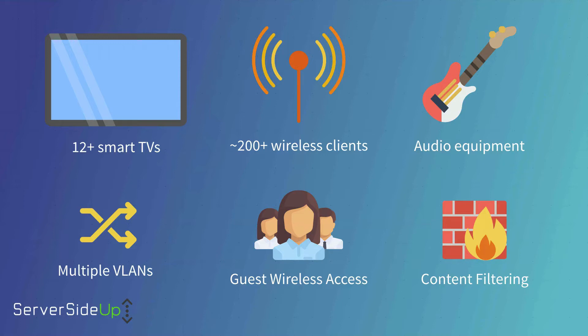We're going to have a bunch of different smart TVs, wireless access clients, and audio equipment. We're also going to separate some parts of the network and protect certain areas. We're going to have guest wireless access, so I'll show you how to configure that beautiful onboarding experience. And then also implementing basic content filtering to prevent people from getting to websites they shouldn't be going to, but also protecting people from any malicious attacks as well.